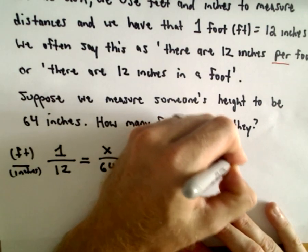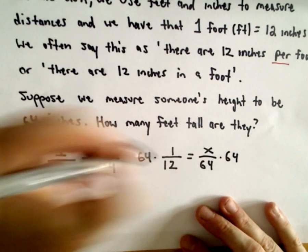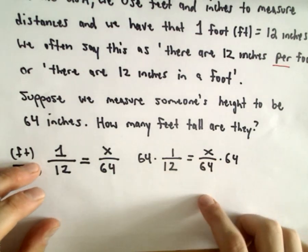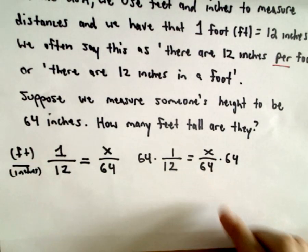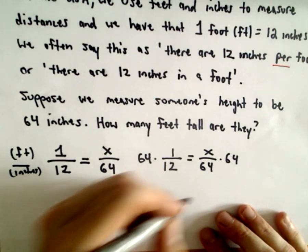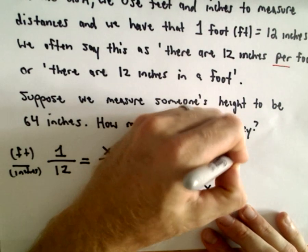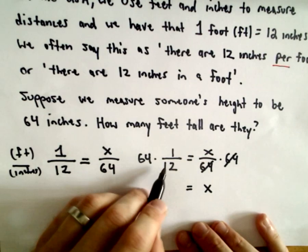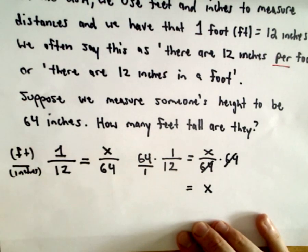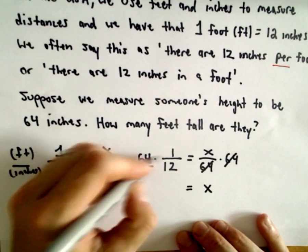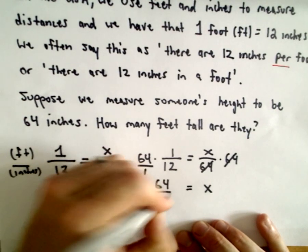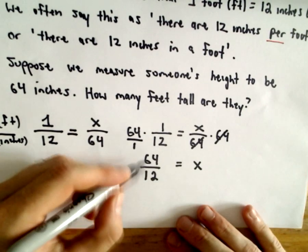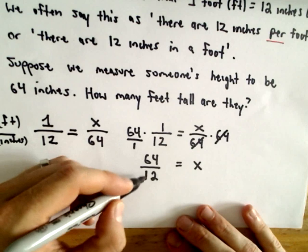We have one over twelve equals x over sixty-four. Well, to solve, we could just multiply both sides by sixty-four. I'm dividing by sixty-four on the right side. I want to get the x by itself. Since I'm dividing by sixty-four, I'll multiply both sides by sixty-four. The sixty-fours will cancel out on the right side, leaving us with just x. And then we're left with sixty-four. You can think about that as being sixty-four over one. We just multiply across the top and across the bottom. That gives us sixty-four over twelve. And now we can do some division.